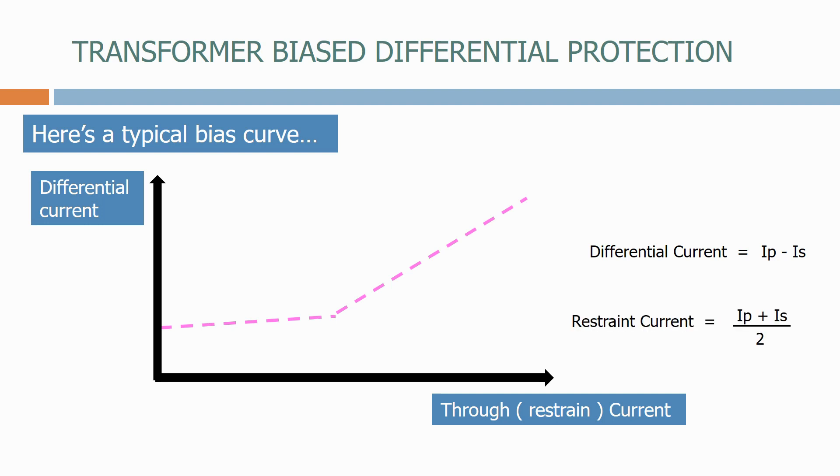On the bottom of the graph we have the through or restrain current. This is calculated by adding the currents together and averaging them by dividing by 2.